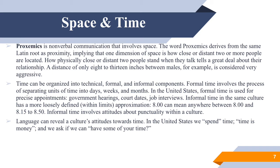Time can be organized into technical, formal, and informal components. Formal time involves separating units of time into days, weeks, and months. In the United States, formal time is used for precise appointments like government hearings, court dates, and job interviews. Informal time, by contrast, has a more loosely defined approximation — for example, 8 o'clock can mean anywhere between 8:00 and 8:15, or even 8:50. Informal time involves attitudes about punctuality within a culture.